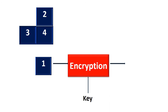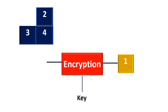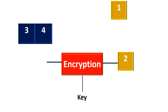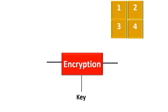The first block is to be encrypted with the key. The encrypted block is denoted in yellow. The second block is waiting for its turn, and now the second block is encrypted. Similarly all the blocks are encrypted. In block cipher, each block is encrypted one at a time, which is achieved through confusion and diffusion.